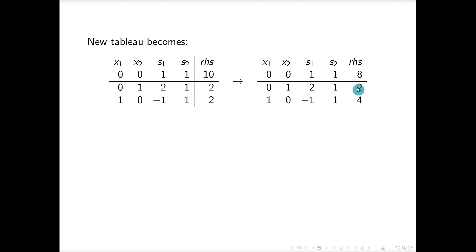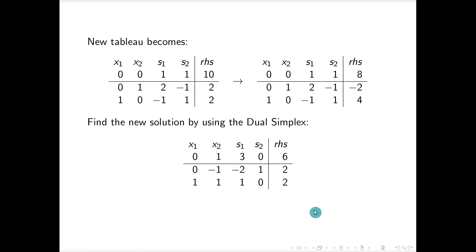Everything else stays the same because all we changed was the right-hand side. The current solution is infeasible, so we'll use the dual simplex method. Checking for a pivot: no pivot there, no pivot there, no pivot there — there's a pivot in the s2 column. We multiply everything by -1, pivot in that position, and the new solution gives x1 = 2, x2 = 0, and the new right-hand side equals 6.